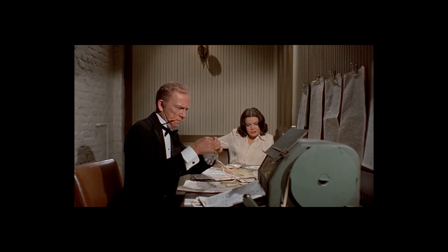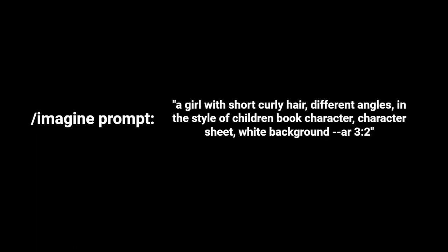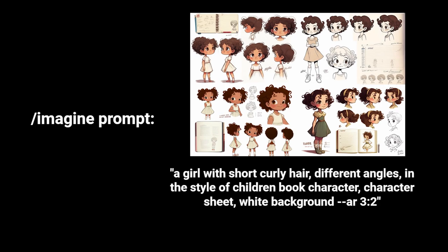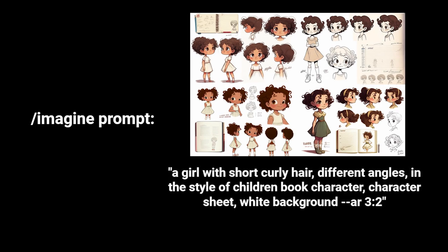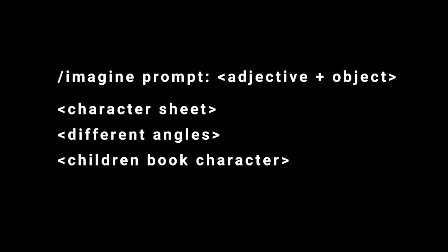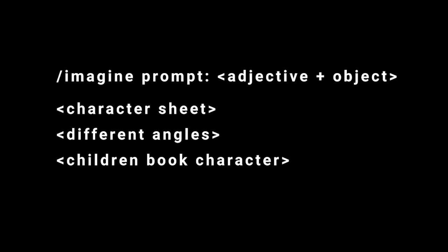Let's move on to the prompts. For Lila, I wrote: 'a girl with short curly hair, different angles, in the style of children book character, character sheet, white background.' The important keywords are: character sheet, different angles, children book character. It's always good to include adjectives to help describe your object. For example, instead of writing 'a girl,' write 'a cute girl with short curly hair' and be more specific for the best results.